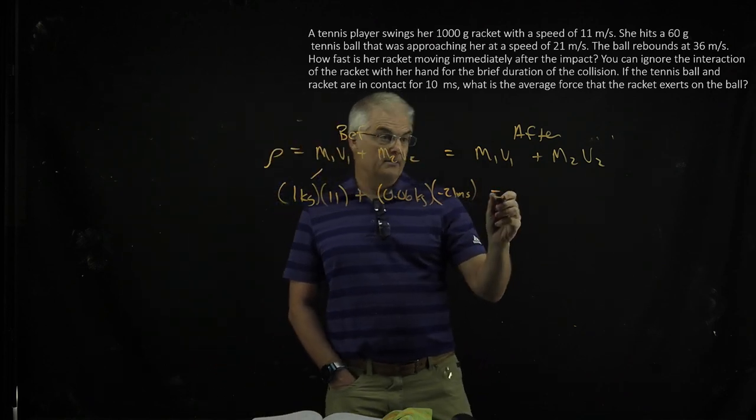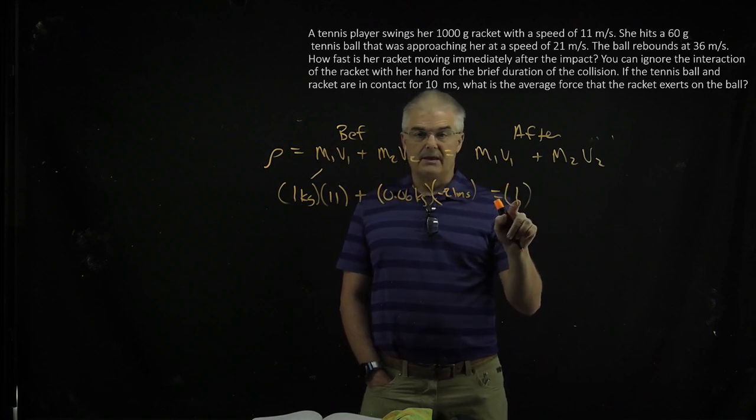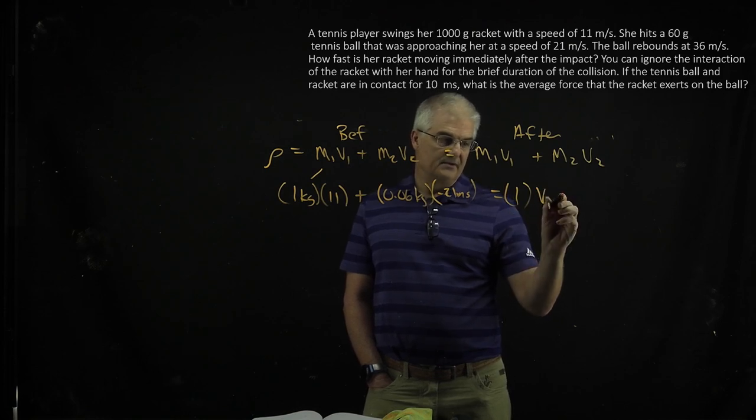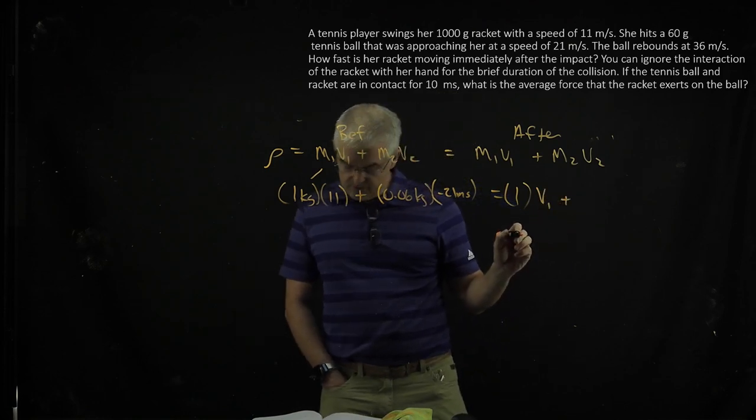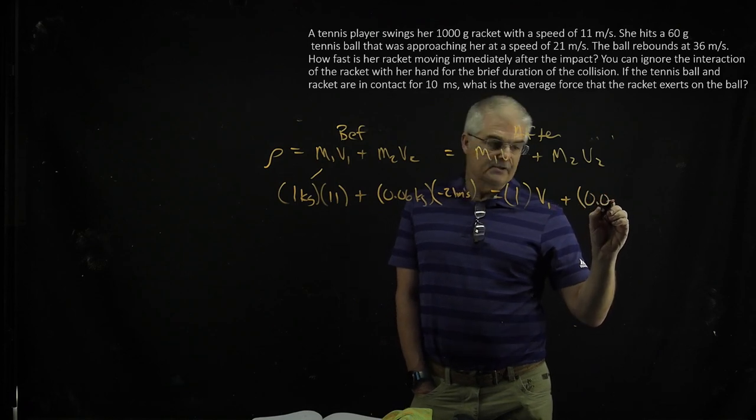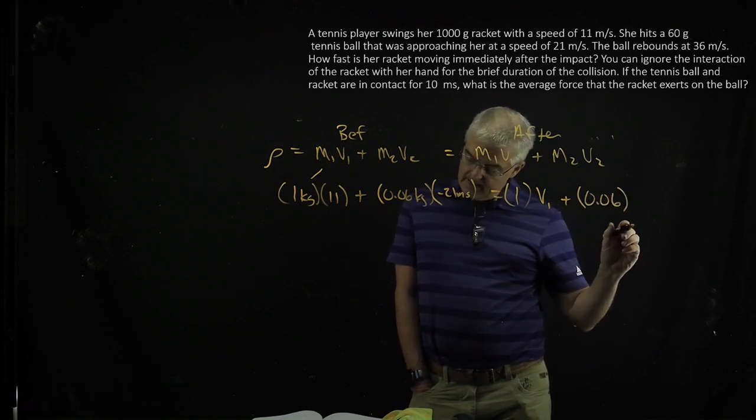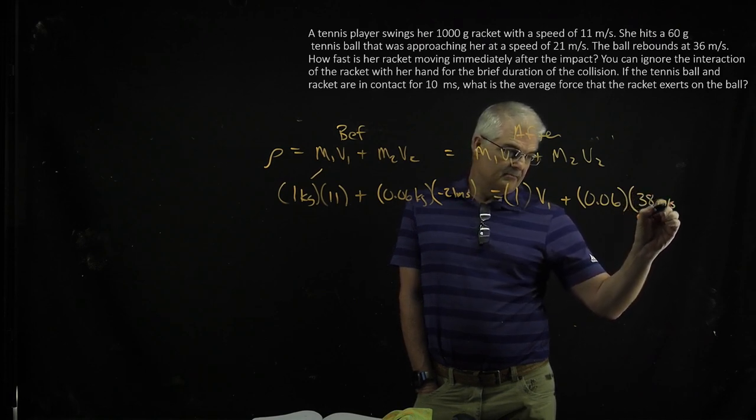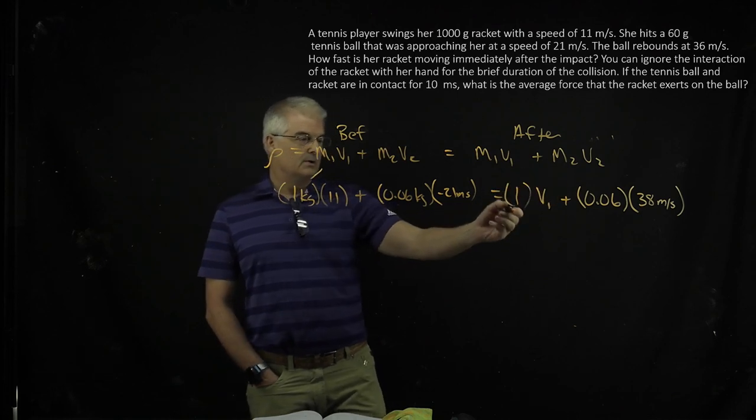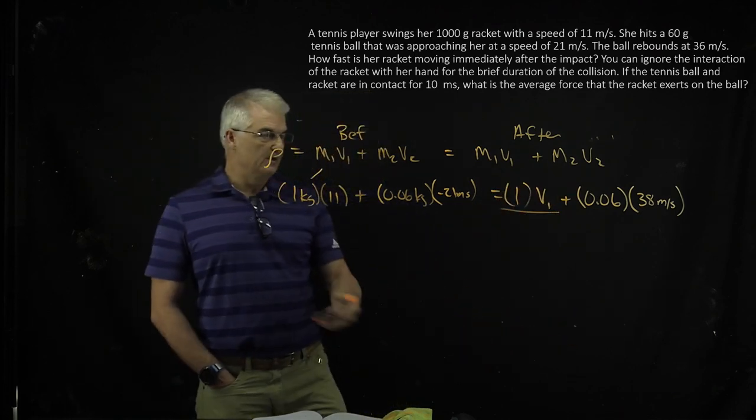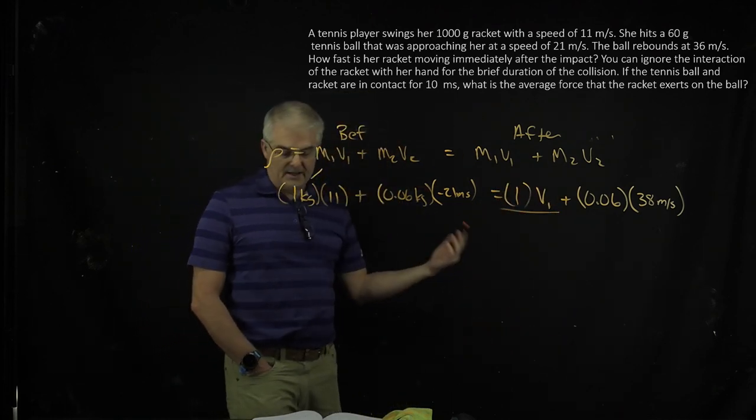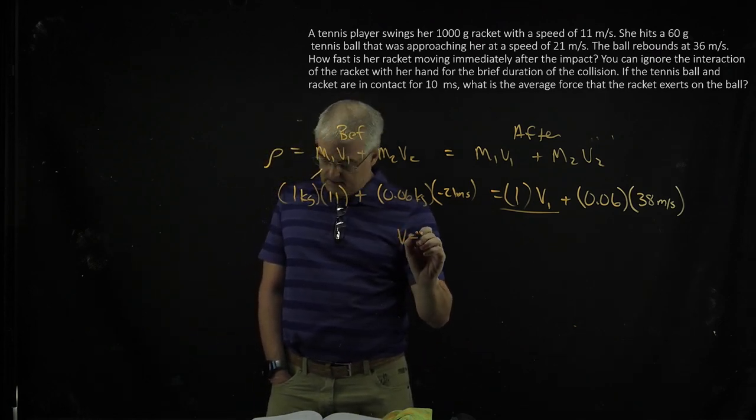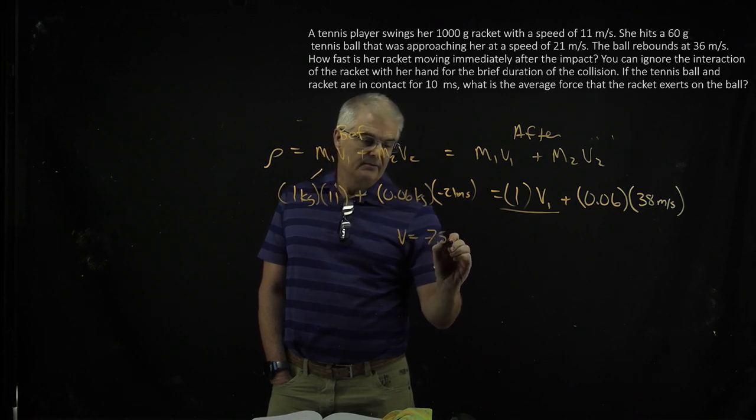Equals the mass, which is 1 kilogram, and the velocity of the racket, I don't know. So we'll just leave that to be V1, plus M2, the mass of the 0.06. This is the ball. And it's now traveling at positive 38 meters per second. So this is the entire equation. You have an equation with only one unknown. You do simple algebra, and I get the velocity to be equal to 7.5 meters per second.